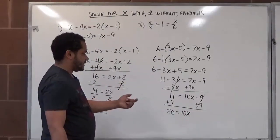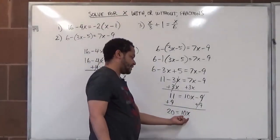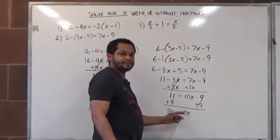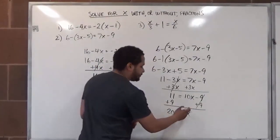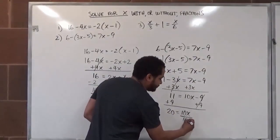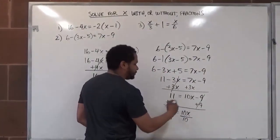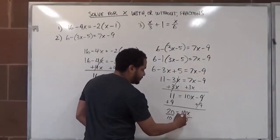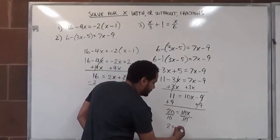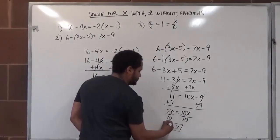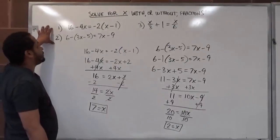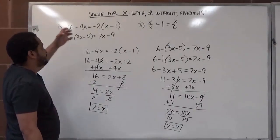To solve for the x term we use the opposite operation to isolate x. This is ten times x, so to use the opposite operation we divide by the same constant in front of x, which is ten. We're dividing both sides — whatever you do to one side you do to the other. These tens go away, and here we have twenty divided by ten which is just two, which is equivalent to x. That takes care of the first component of without-fractions problems for solving for x.